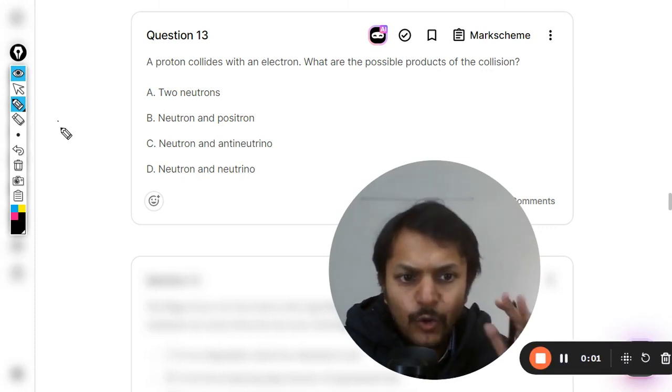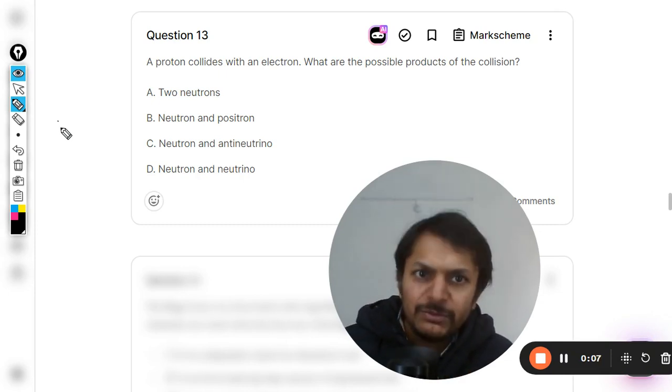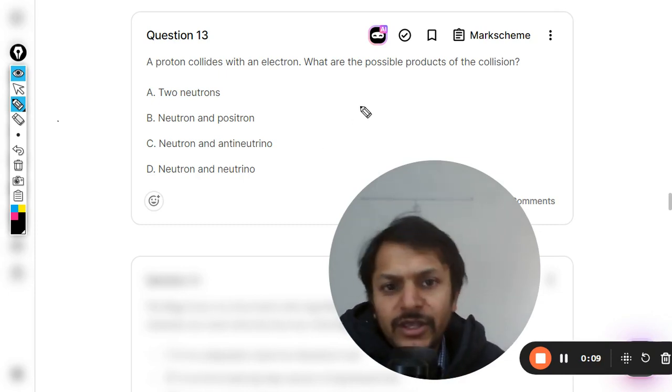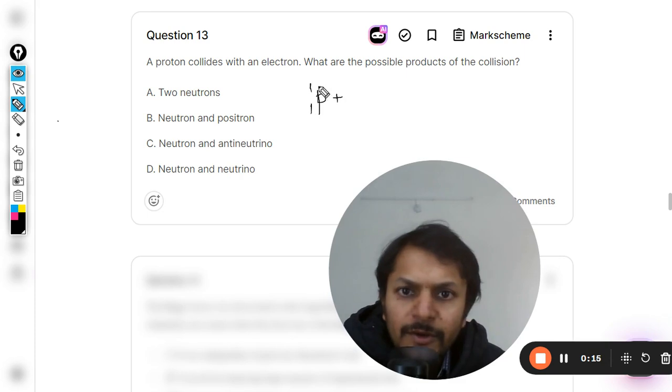Let's see what is in this question. A proton collides with an electron. What are the possible products of the collision? It's a good question, so we are going to write the reaction here first of all. This is proton, the charge number is plus one, the mass number is one.